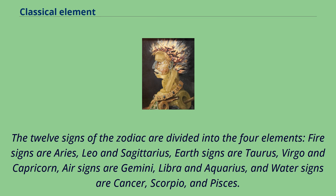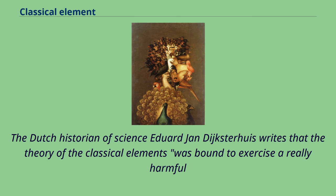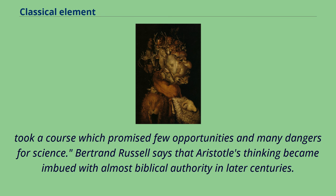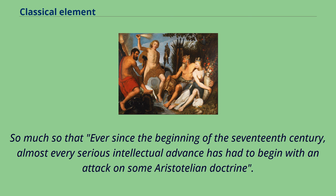The Dutch historian of science Eduard Jan Dijksterhuis writes that the theory of the classical elements was bound to exercise a really harmful influence. As is now clear, Aristotle, by adopting this theory as the basis of his interpretation of nature and by never losing faith in it, took a course which promised few opportunities and many dangers for science. Bertrand Russell says that Aristotle's thinking became imbued with almost biblical authority in later centuries, so much so that ever since the beginning of the 17th century, almost every serious intellectual advance has had to begin with an attack on some Aristotelian doctrine.